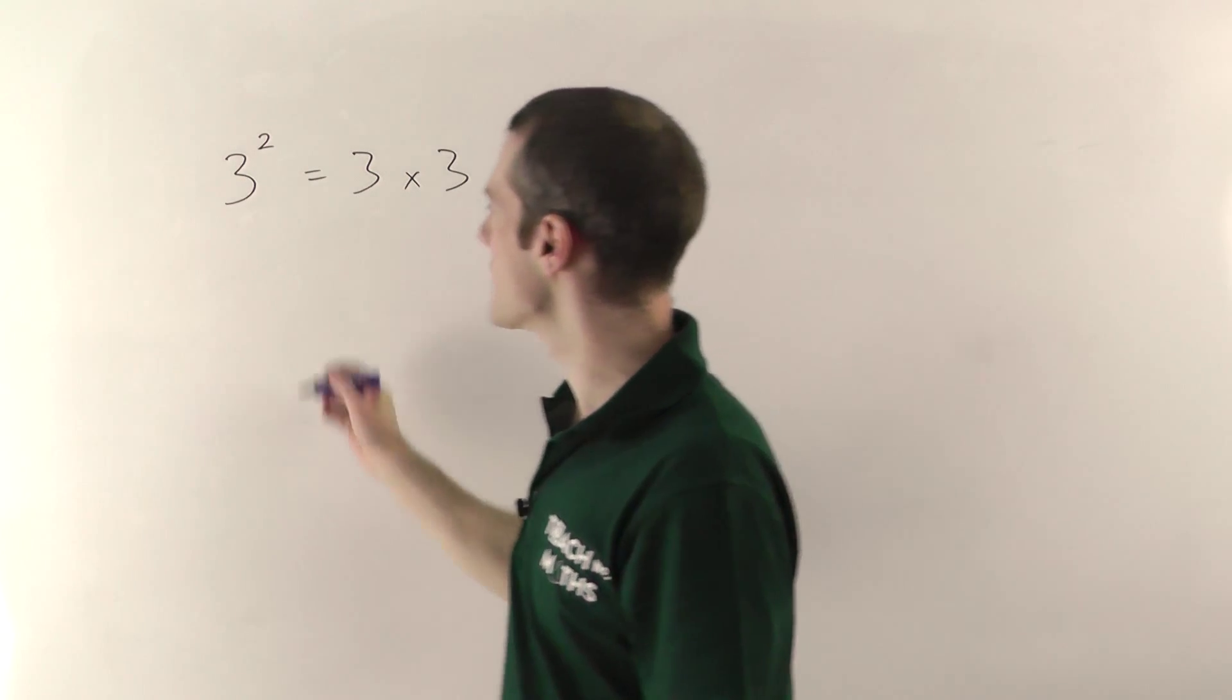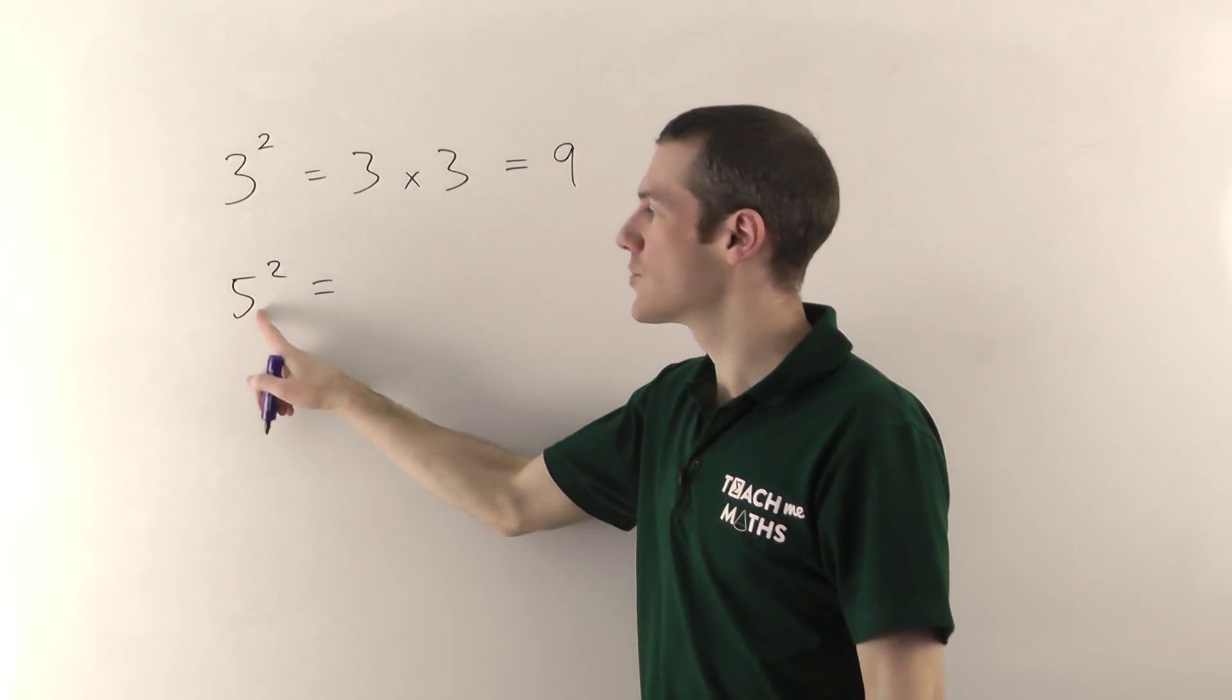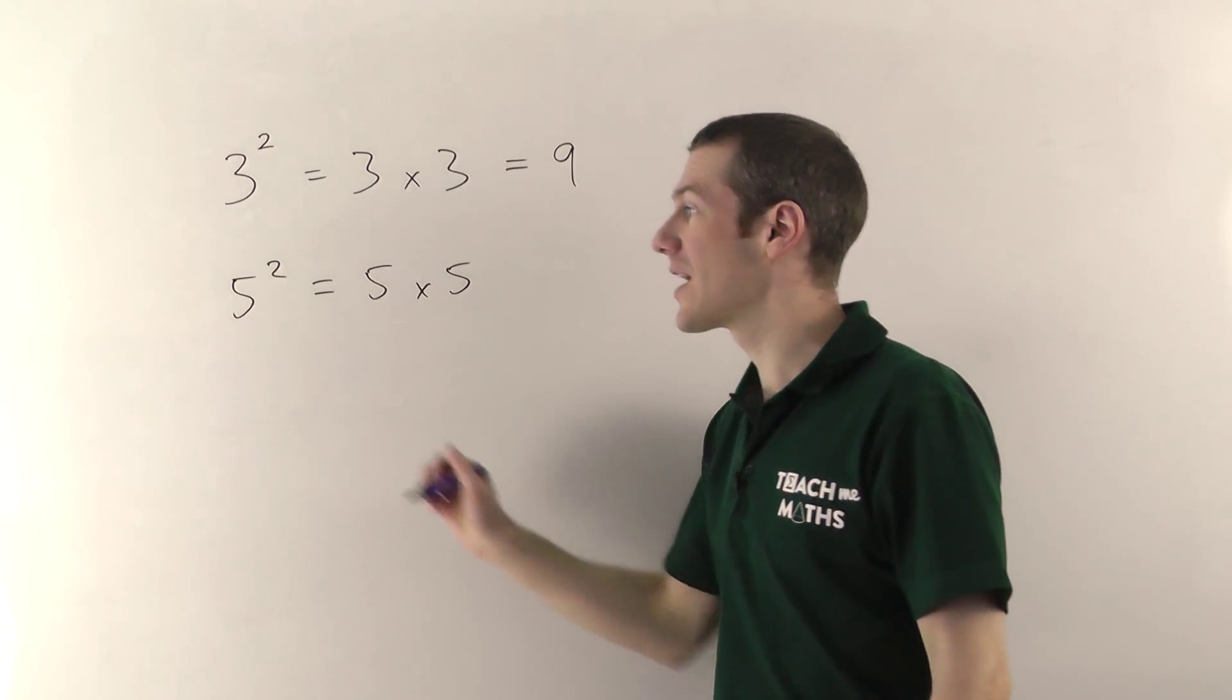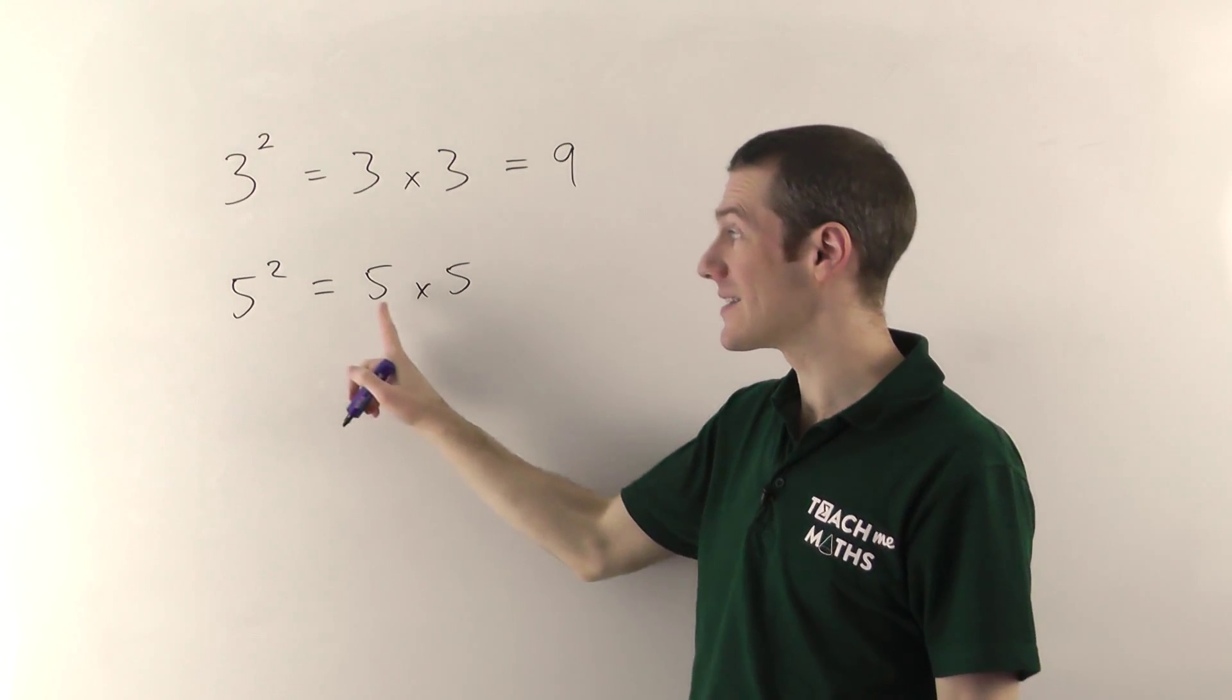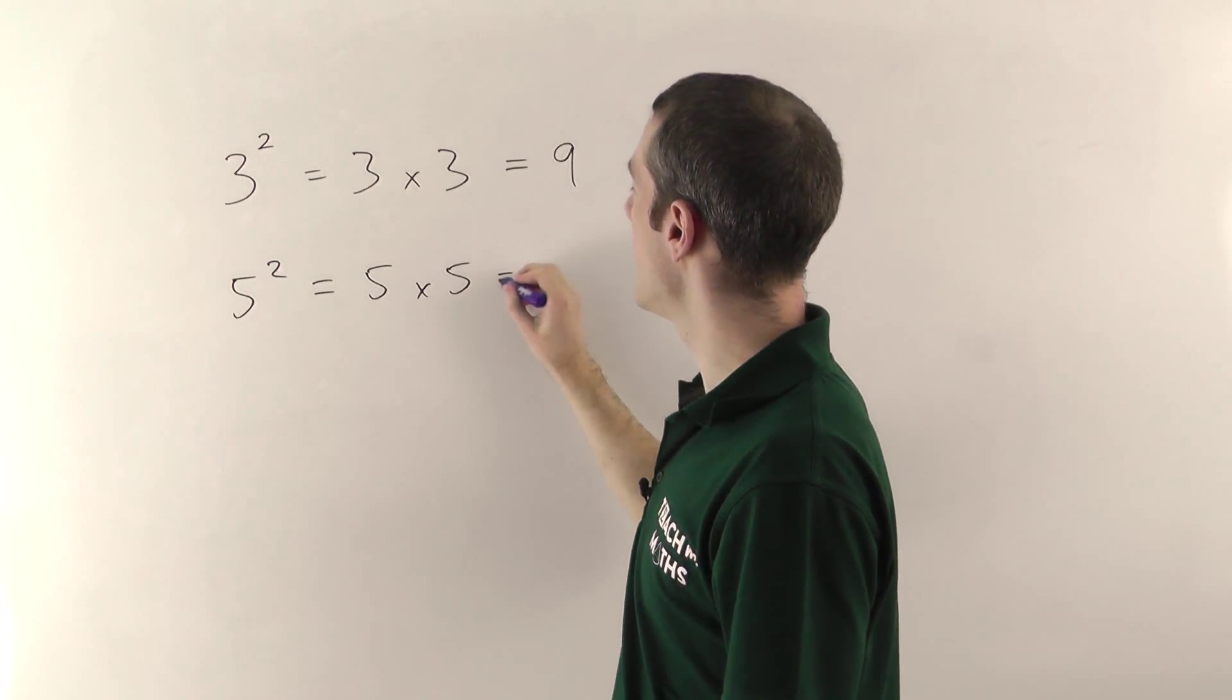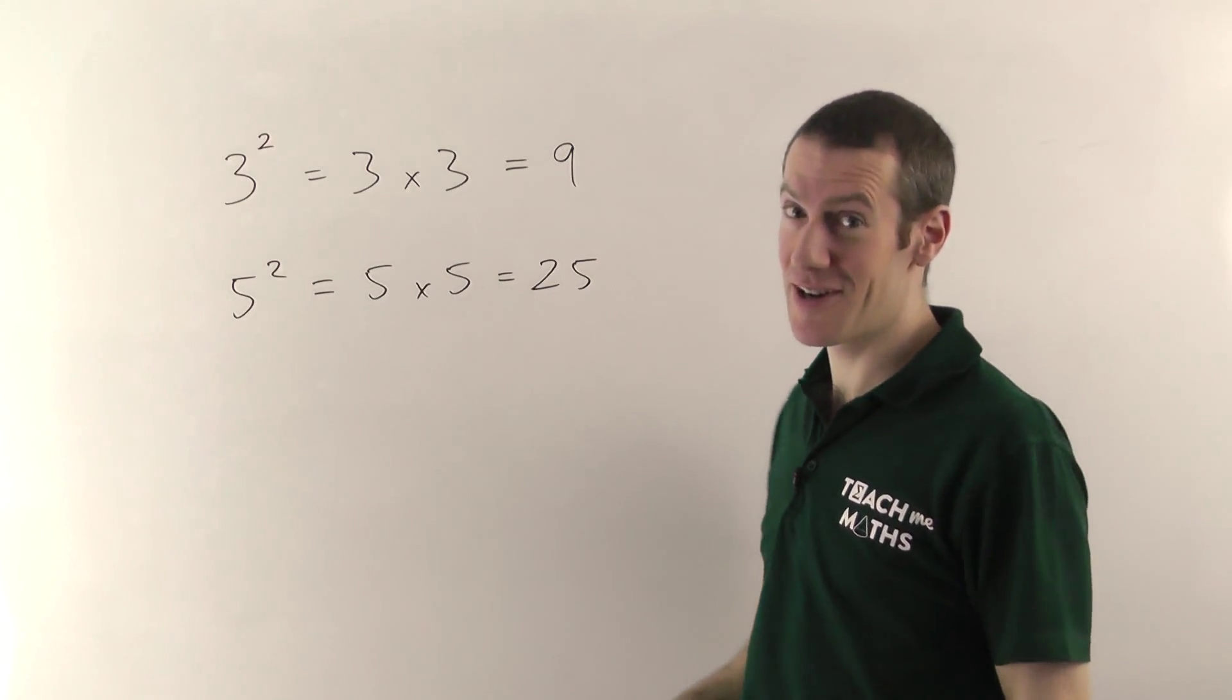So let's pick one more example. If we have 5 squared, that means you've got two 5's multiplying, so that's 5 times 5. Again, this is not 2 times 5, it's 5 times 5. Whatever the number is, it multiplies itself. 5 times 5 gives you 25. So that's squaring, that's all there is to it really.